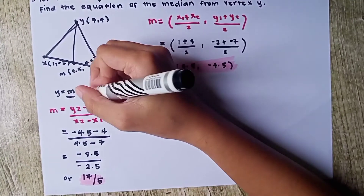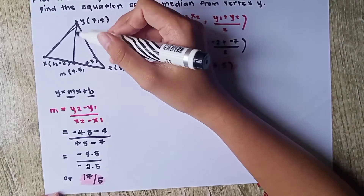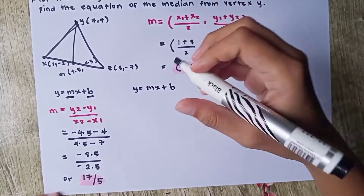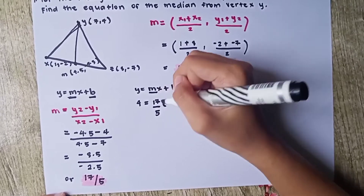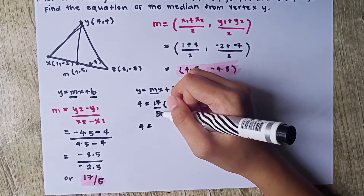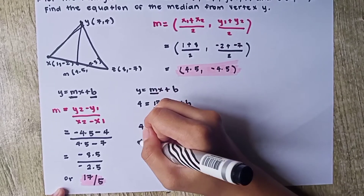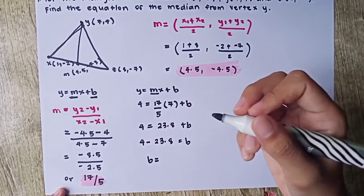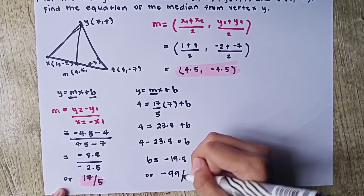Next, we need to find the value of b. We will plug in either of the points — Y or the midpoint. Using Y(7, 4): 4 = (17/5)(7) + b, so 4 = 23.8 + b. Transposing, b = 4 - 23.8 = -19.8, or -99/5.